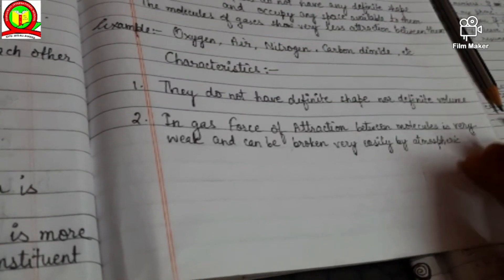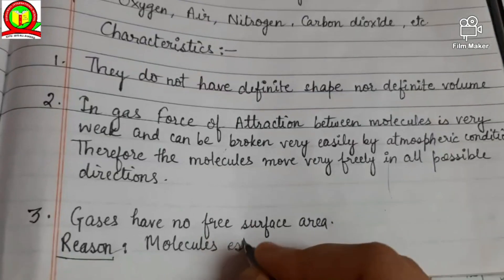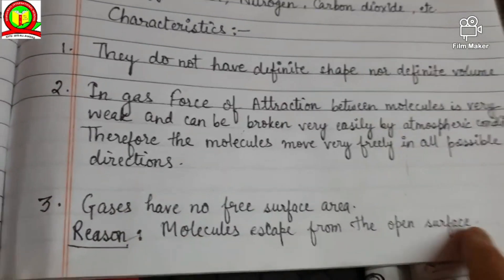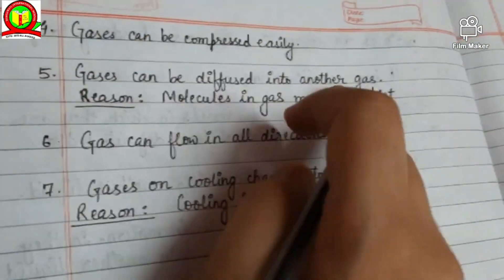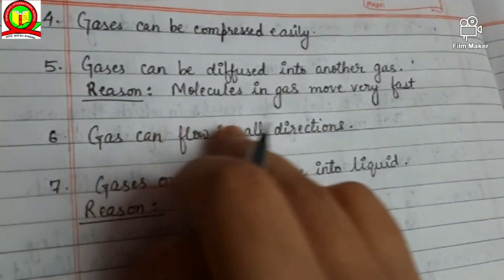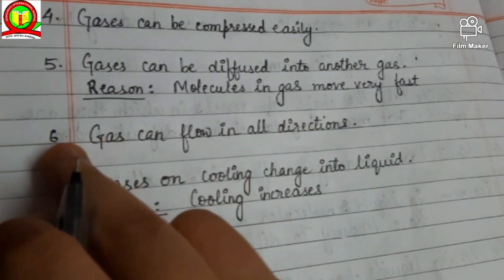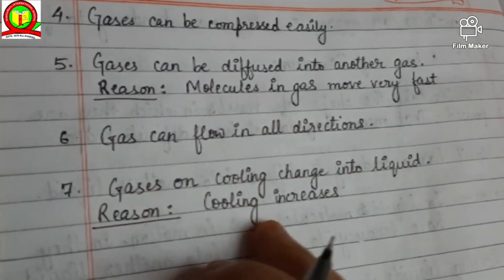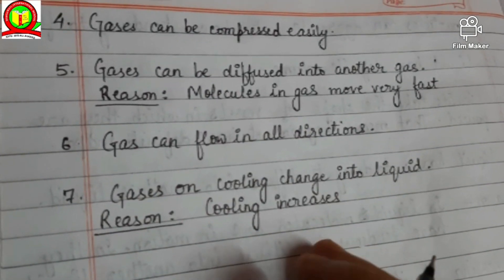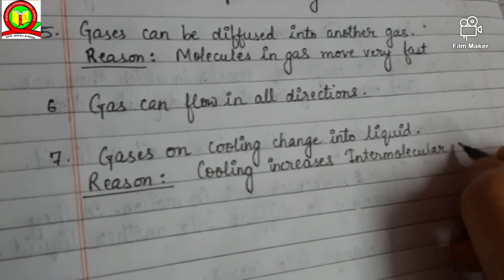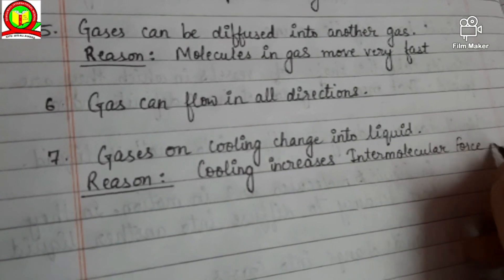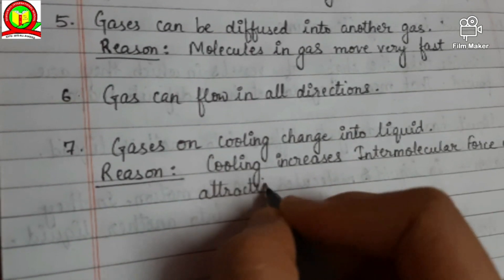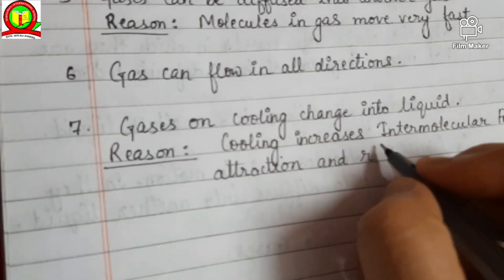Characteristics of gases: they do not have definite shape nor definite volume. The force of attraction between molecules is very weak and can be broken easily by atmospheric conditions, so the molecules move very freely in all possible directions. Gases have no free surface — molecules escape from the open surface. Gases can be compressed easily, can diffuse into another gas because molecules move very fast, and can flow in all directions.